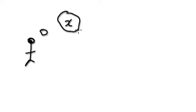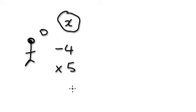Let me give you some more mind reading examples. I'm thinking of a number. I'm going to take away 4, then multiply by 5, then divide by 2, and it gives me 15.